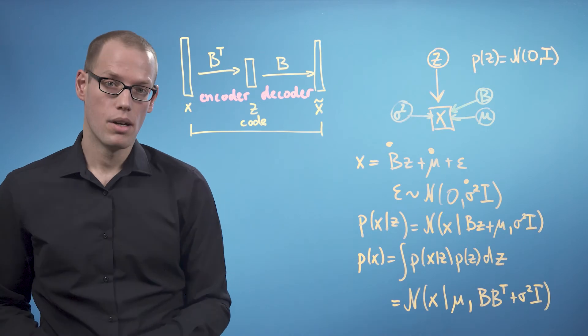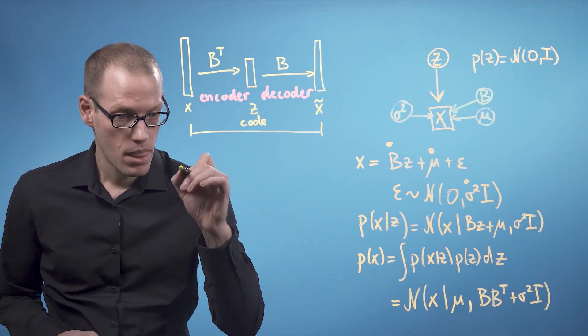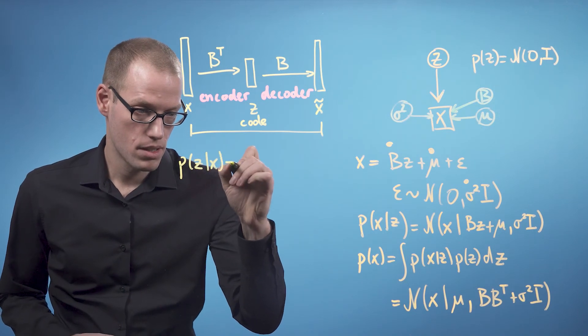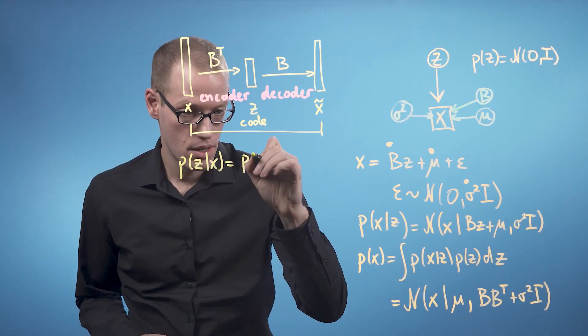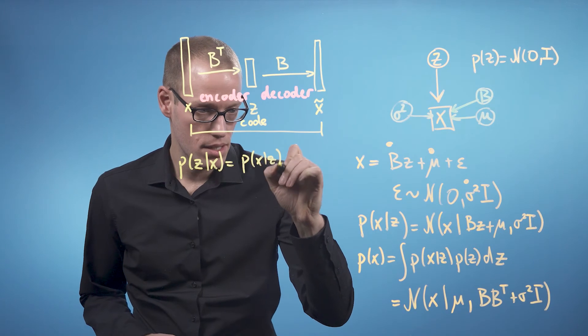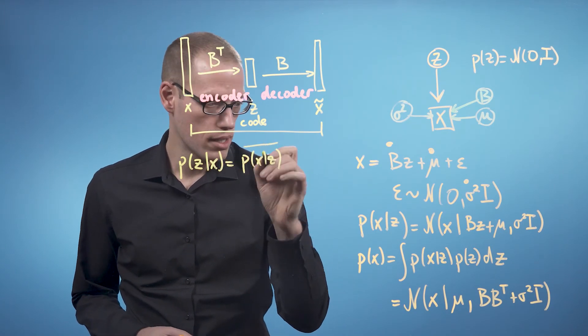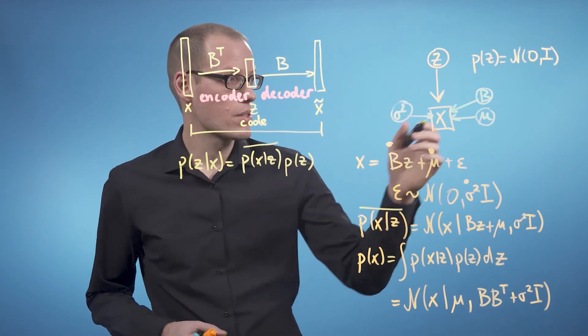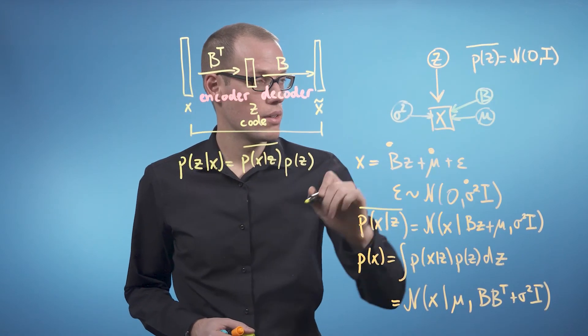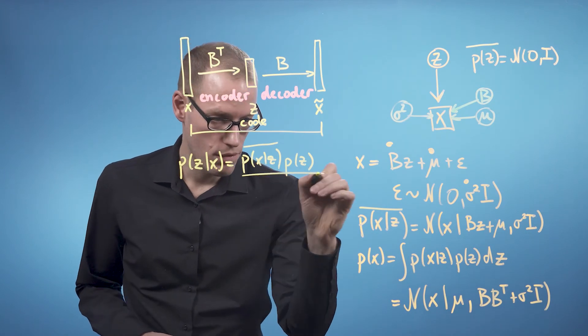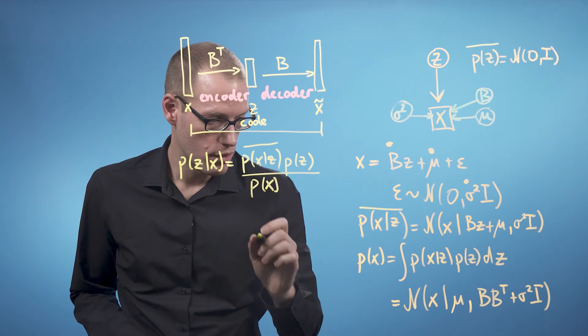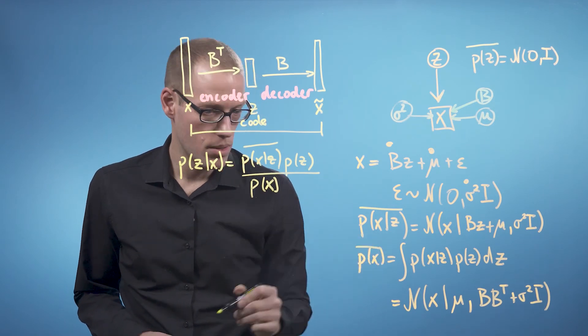In particular, we are going to get P of Z given X as P of X given Z, so that is the likelihood which comes from here, times P of Z, so that's our distribution that we have here, divided by the marginal likelihood P of X which comes from here.